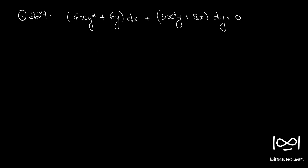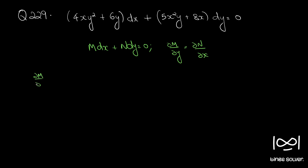The given differential equation is in the form M dx + N dy = 0. The first step is to check whether the given equation is exact using the necessary and sufficient condition ∂M/∂y = ∂N/∂x. Here, ∂M/∂y is 8xy + 6 and ∂N/∂x is 10xy + 8.